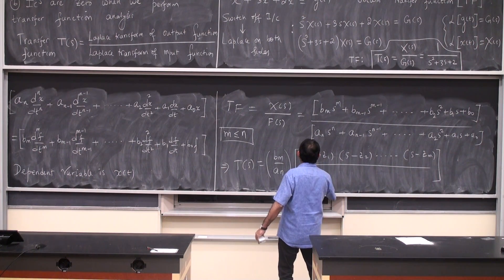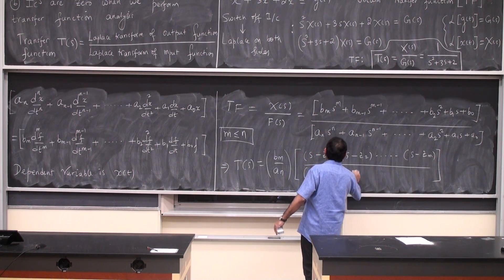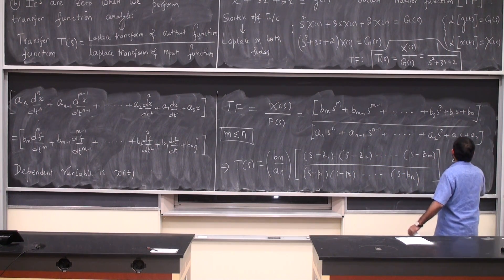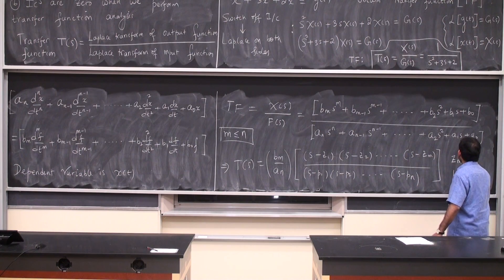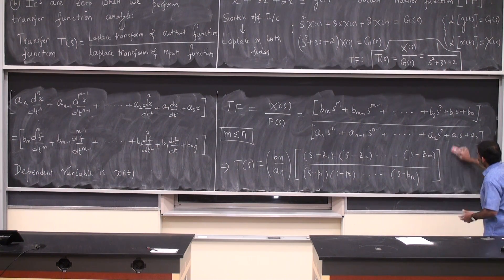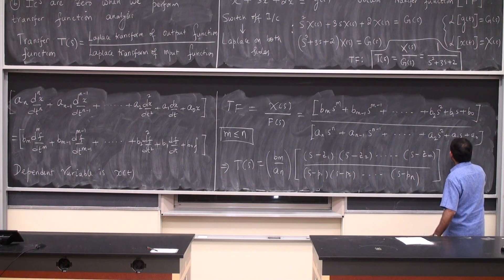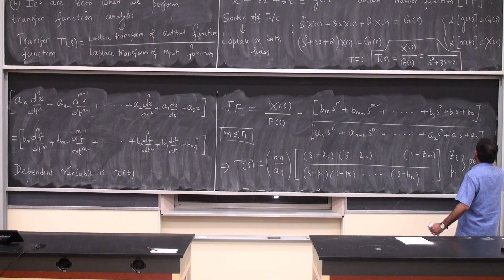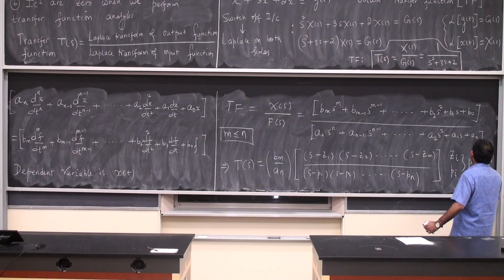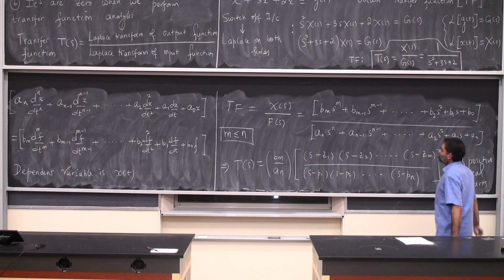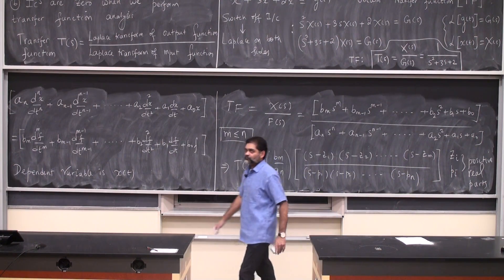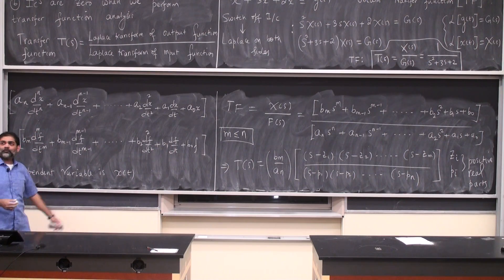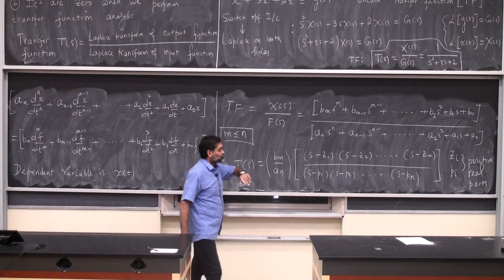So it's going to be (s minus p_1)(s minus p_2)...(s minus p_n), where z_i and p_i are positive numbers, or you can write them for negative. If you assume them to be negative, it's just going to be s plus z_1, s plus z_2, s plus z_m, and s plus p_1, p_2, and so forth.